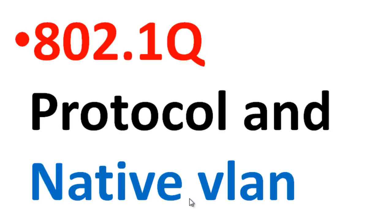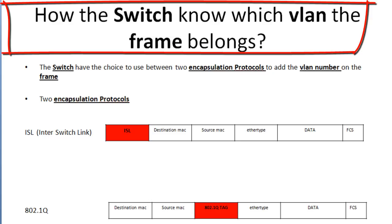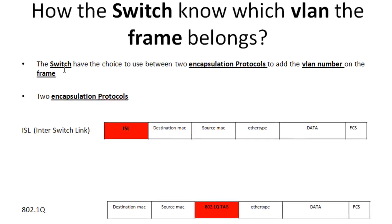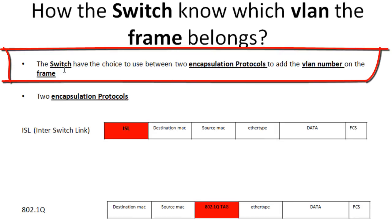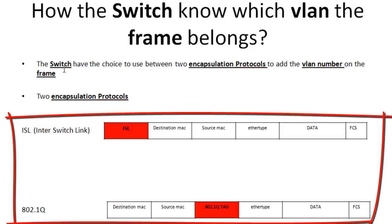Hello everybody, welcome to this video training. Now that you have a basic understanding of VLAN concepts, we are faced with a new challenge. The question I'm going to ask is: how does the switch know which VLAN the frame belongs to? To answer this, the switch has the choice between two encapsulation protocols to add the VLAN number on the frame. Those two protocols are ISL and 802.1Q.